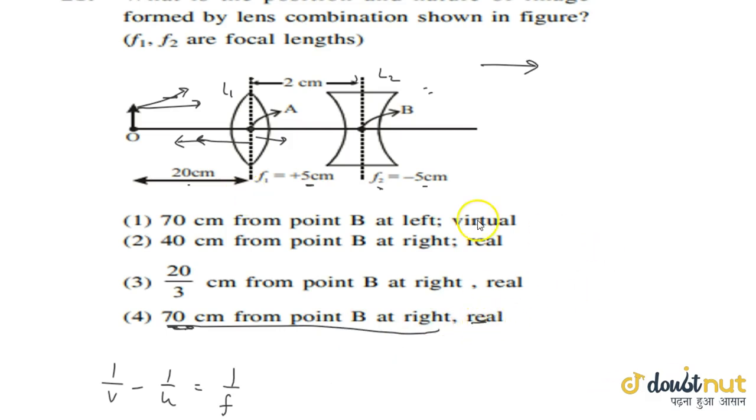Now, will it be real or virtual? Look, with any lens, if the object is here and its image forms on the opposite side of the lens pole, the image is always real. And if the object's image forms in the same direction where it is placed, then it is virtual. So obviously option 4 is the correct answer: 70 cm from point B at right and real image.